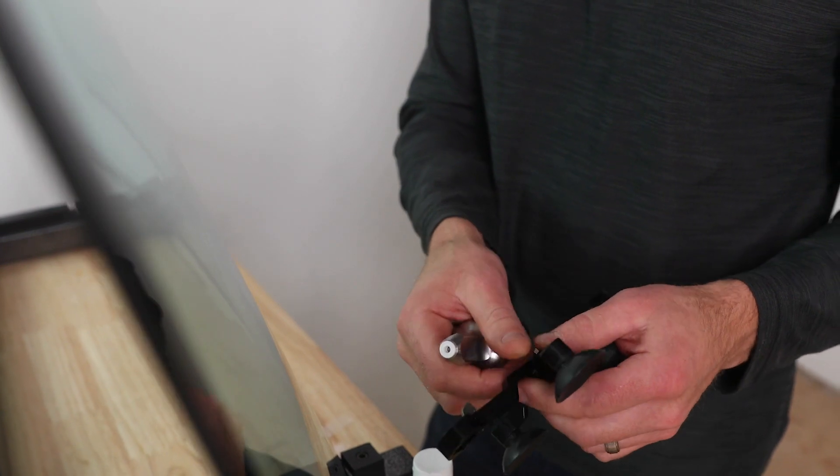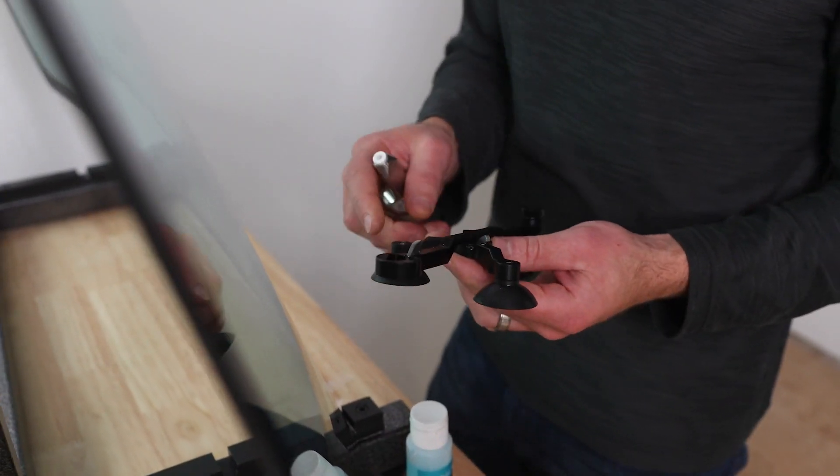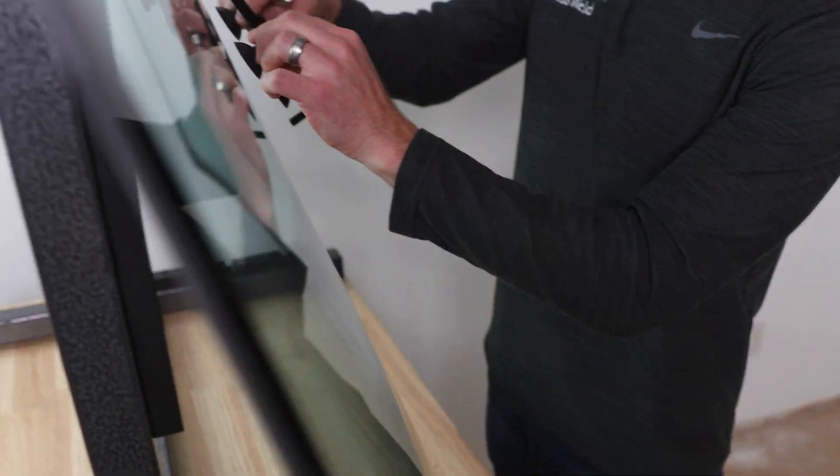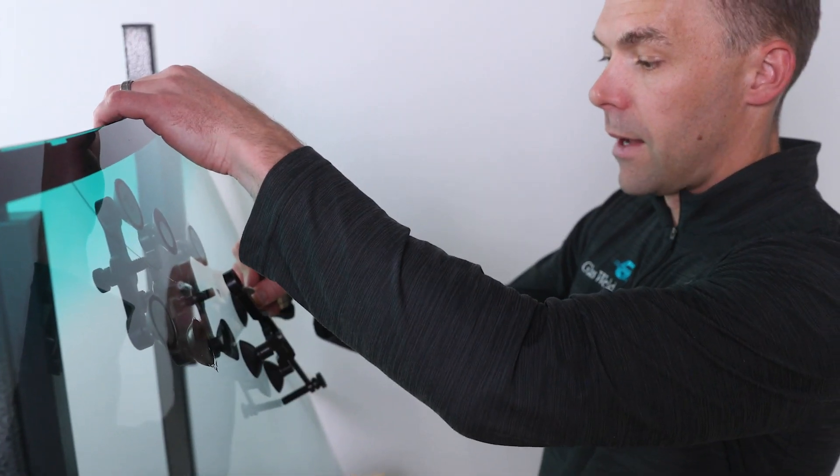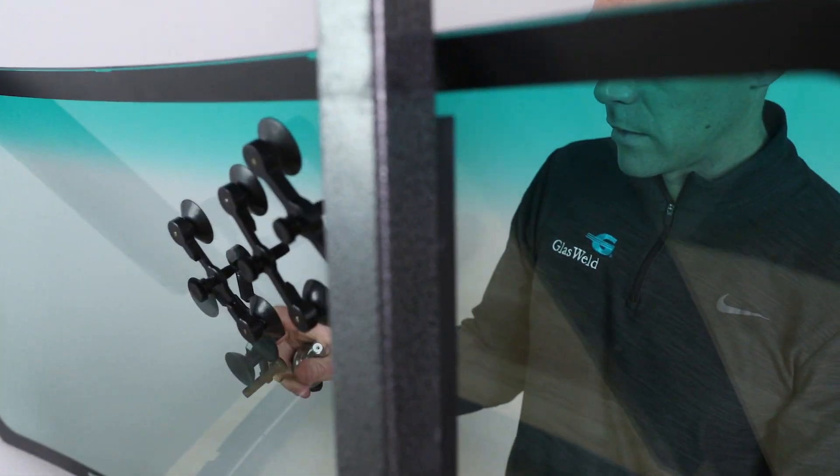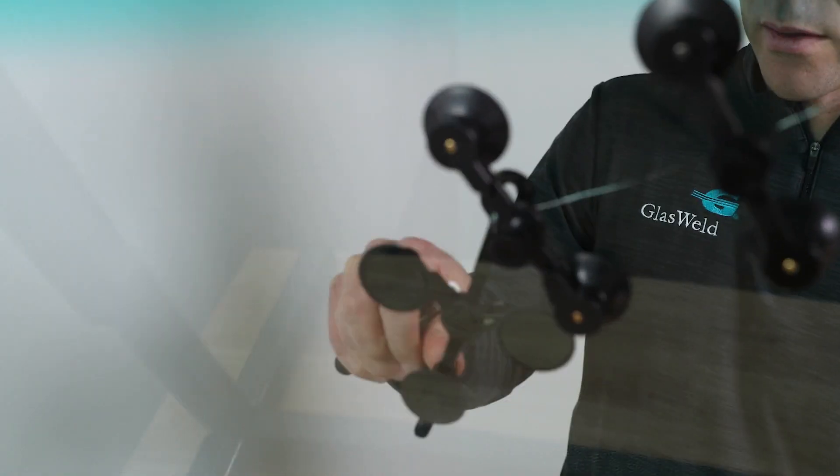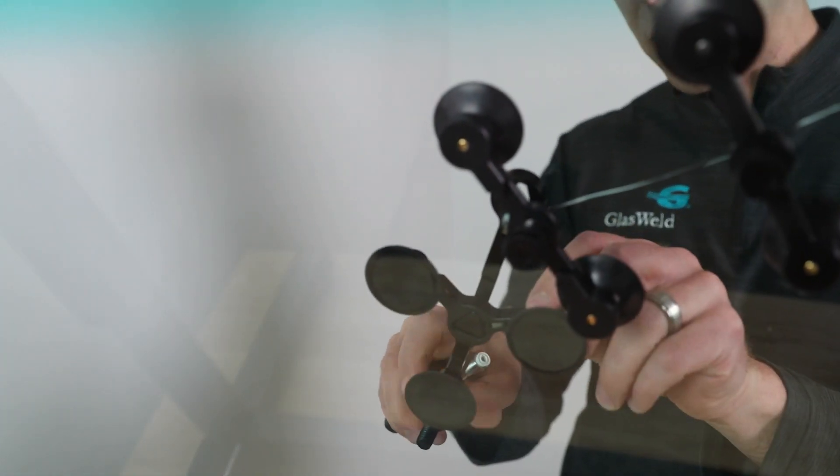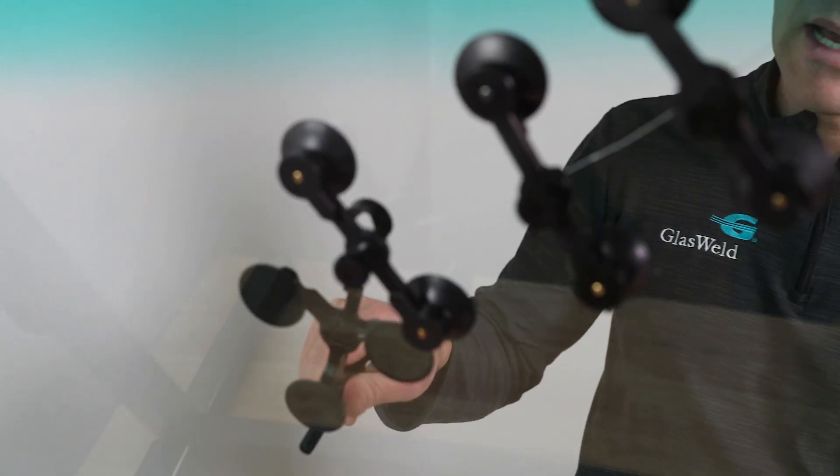You notice we've got our long crack extension tool which just snaps into place. Most of you probably already know that, and then we're just going to set it up here right over the impact point, just like we would normally, and just push our suction cups down. Back off our leveling screw so we get the suction cup adhered. And like you've probably seen in some of our other tutorial videos, you want a slight downward angle.